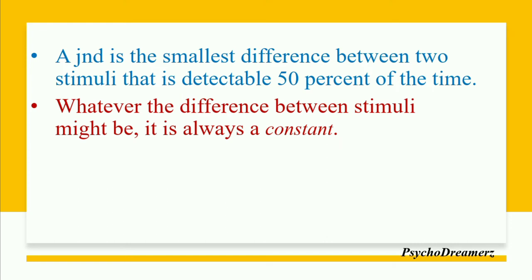If the detection is not at the JND level — if it is more than 50% — then JND will be less than the difference threshold and we go to a lower level. The key principle is that whatever the difference between stimuli might be, it is always a constant proportion. This is what is meant by Weber's Law: the difference between stimuli will always be constant.